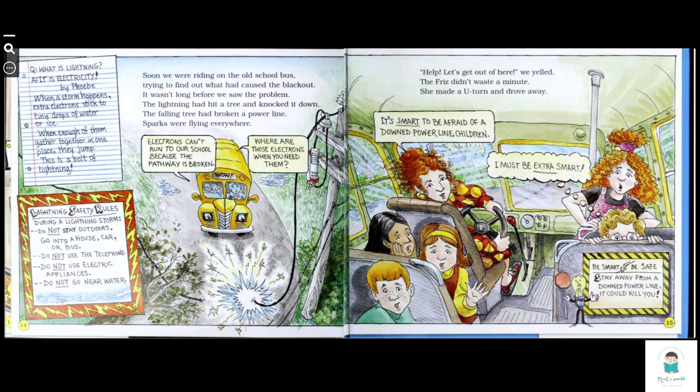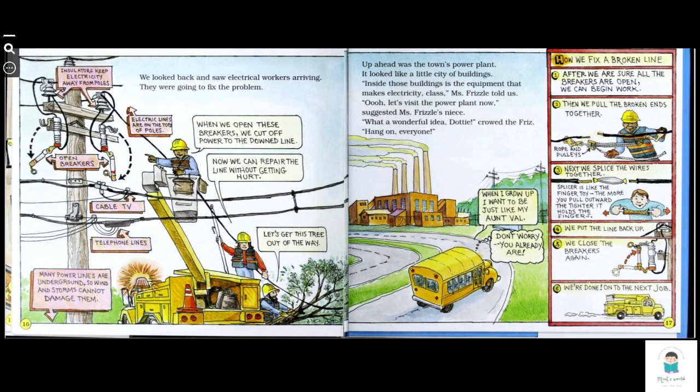The Friz didn't waste a minute. She made a u-turn and drove away. It's smart to be afraid of downed, paralyzed children. I must be extra smart. Be smart, be safe. Stay away from a downed power line. It could kill you.